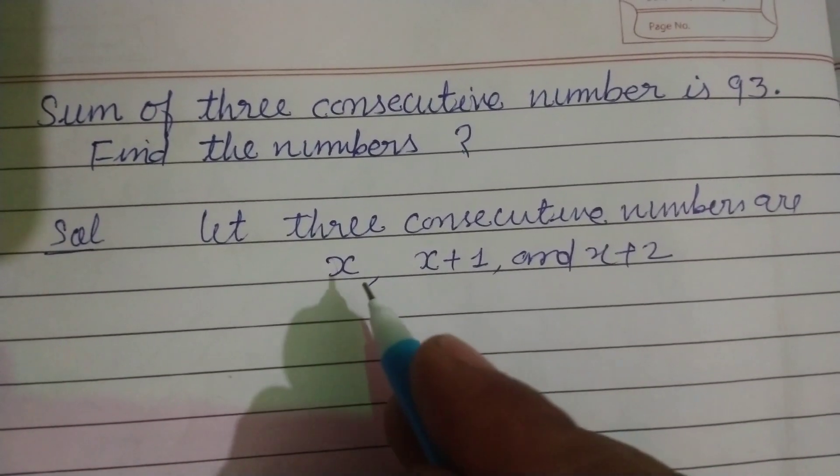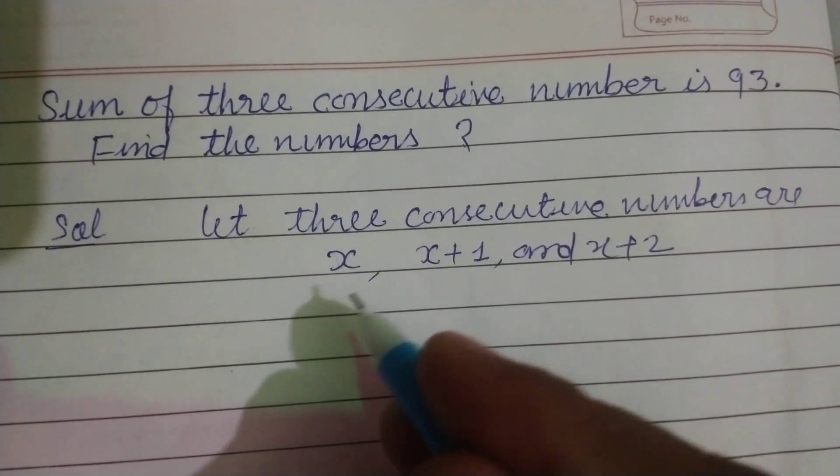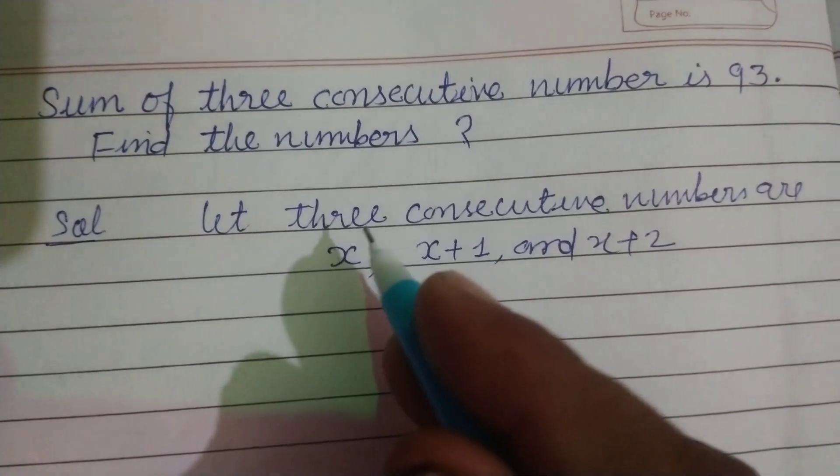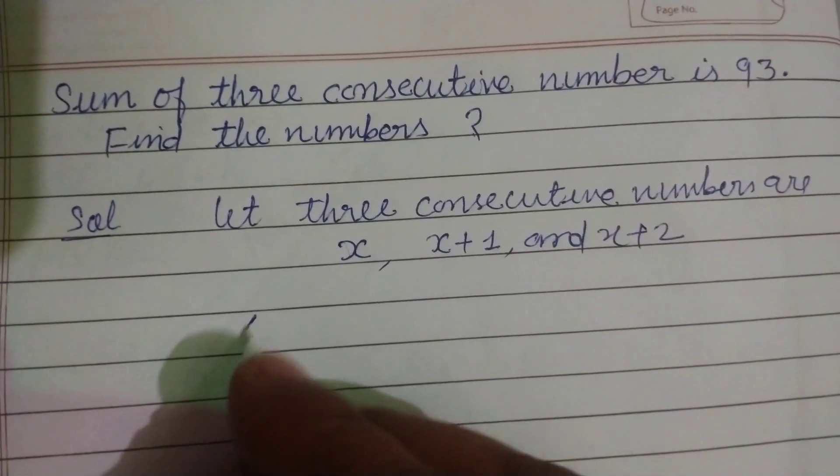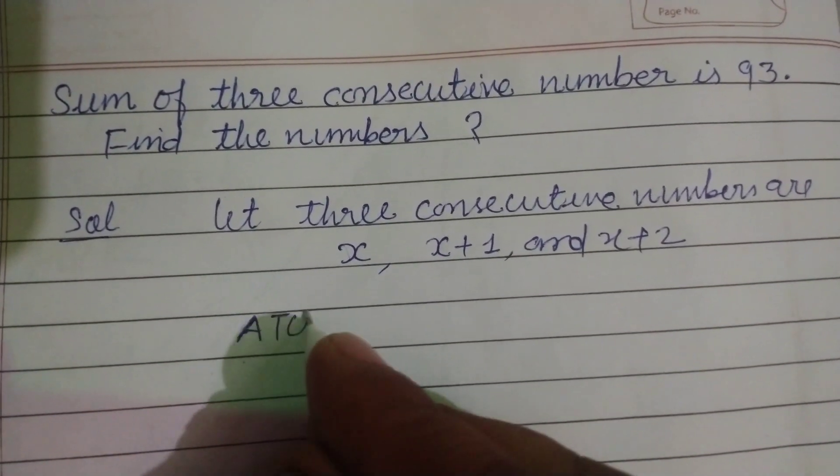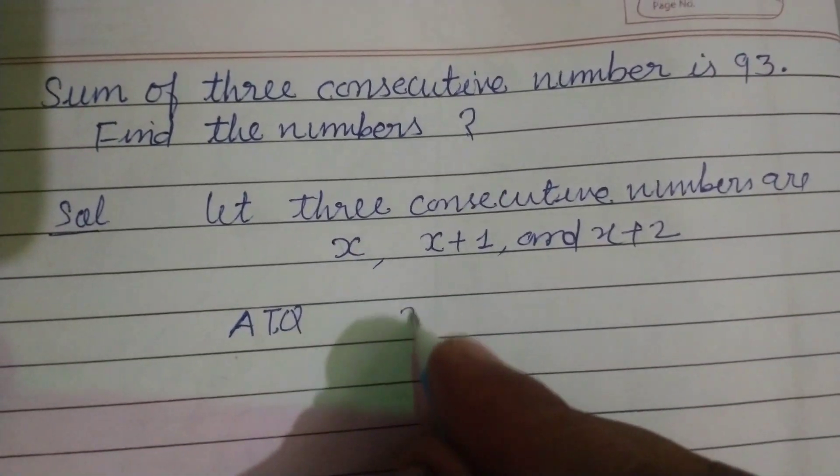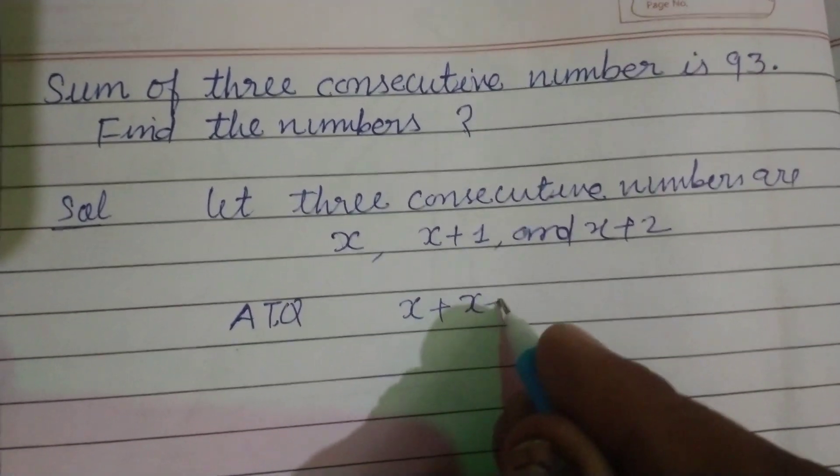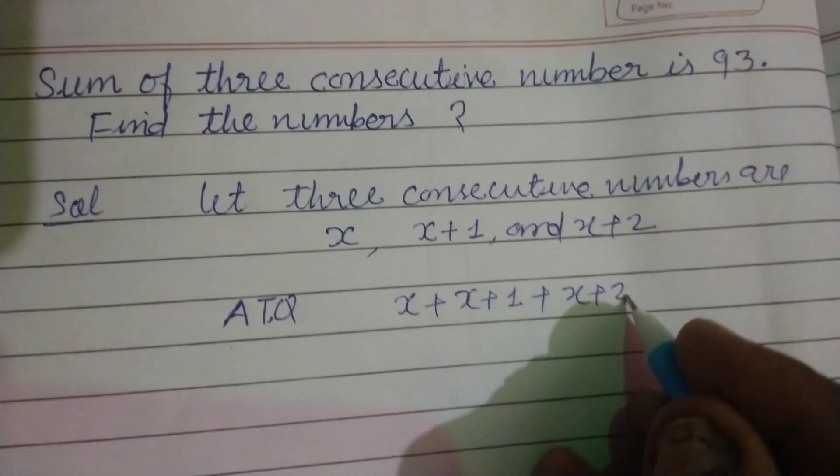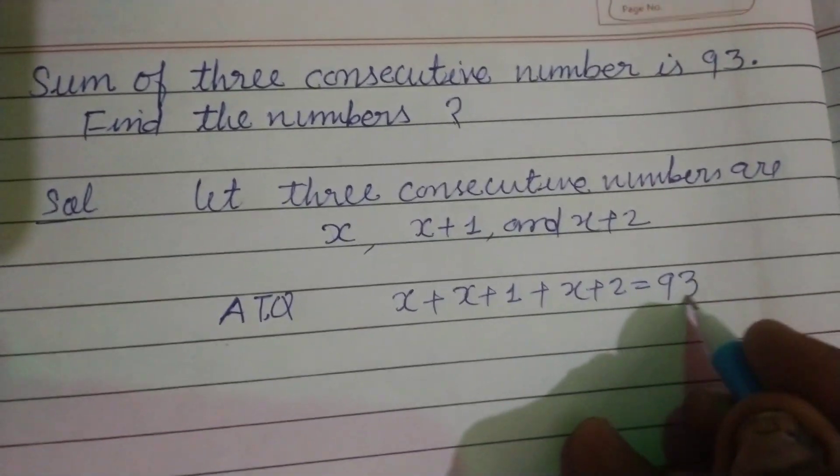When we add 1 to a given number, we get the consecutive number of the previous number. And according to the question, the sum of these numbers, x plus x plus 1 plus x plus 2, is given to us as 93.